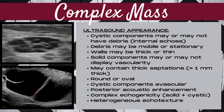A complex mass is generally round or oval, and the cystic components are generally avascular. However, mobile debris within the cystic components can mimic the appearance of a Doppler signal on ultrasound. Complex masses generally have posterior acoustic enhancement and will display a complex echogenicity with both solid and cystic components, as well as a heterogeneous ultrasound echo texture.